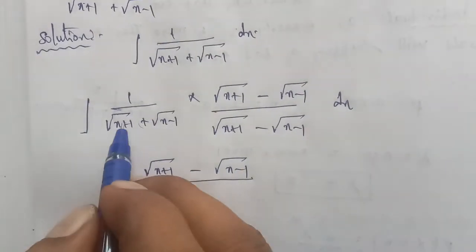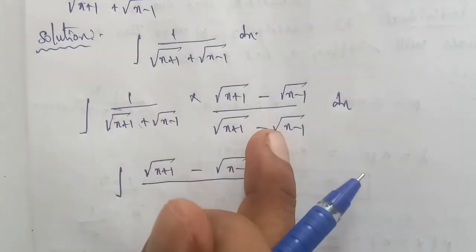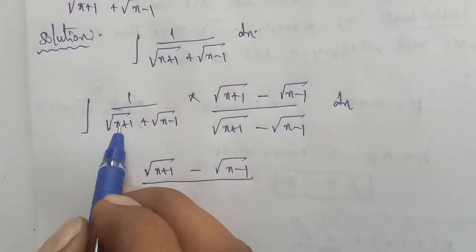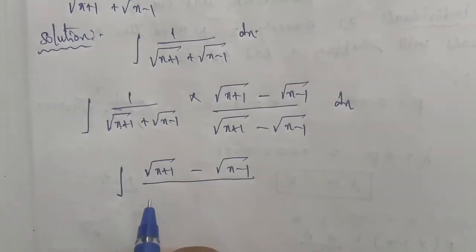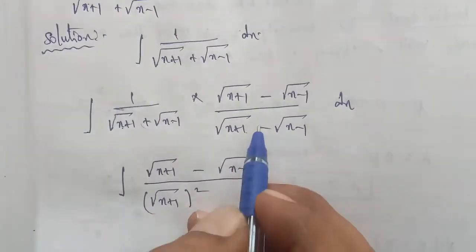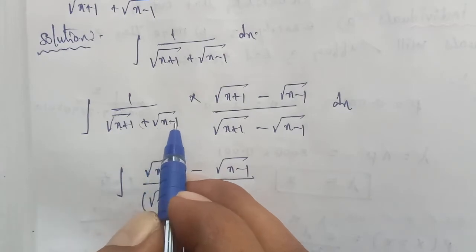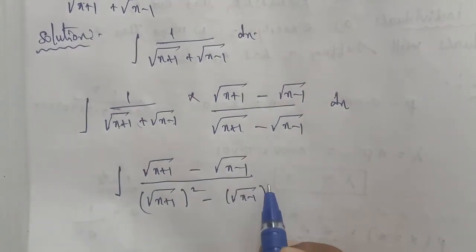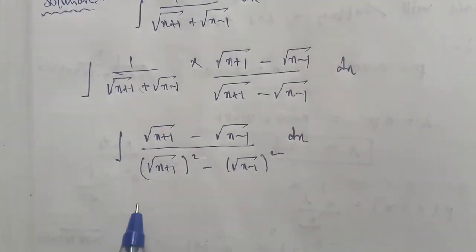The denominator becomes the difference of squares: the whole power squared, plus into minus gives minus. So square root of X plus 1 squared minus square root of X minus 1 squared, into dx. The square roots cancel in the denominator.